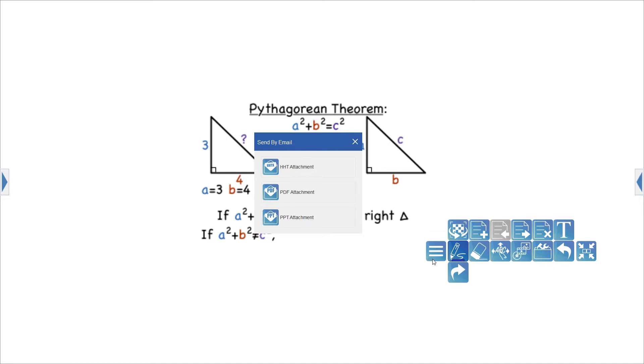A small window will pop up letting you choose how you want to send your presentation. You can choose to send the file as an HHT or IdeaMax file, as a PDF, or as a PowerPoint file. Let's choose PDF for now.